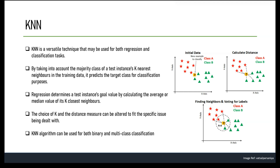In multi-class classification, the goal is to classify instances into one of several classes such as red, green, or blue. One approach for using KNN in multi-class classification is the One-vs-All (OVA) method, also known as one-vs-rest. In this approach, KNN is trained separately for each class, treating all other classes as a single class. For three classes A, B, C, three KNN classifiers are trained, and the instance is classified by the highest number of votes.